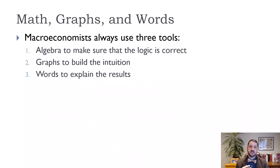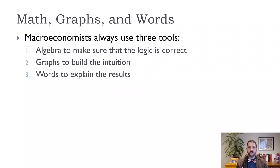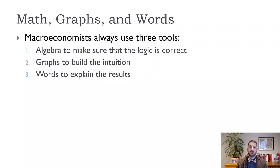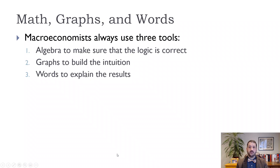This textbook emphasizes that economists need to do three things: use algebra to make sure the logic is correct — and the modeling assumptions are very important, because when a model doesn't make sense it's usually a bad assumption, not a math error — use graphs to build intuition and give complex ideas structure, and use words to explain the results. If you can do all three, you can communicate the idea behind the model.